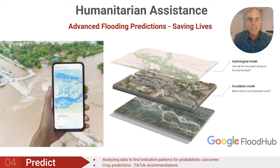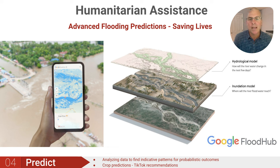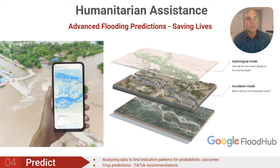In humanitarian assistance, Google is using geographic information systems and predictive analytics to understand flood risk, which kills tens of thousands of people per year and causes $4.7 billion in damages per flood in the US alone. In 1999, over 35,000 people lost their lives in floods around the world. In 2019, the US experienced a total of $20 billion in flood damages. Predicting floods can save lives and property.